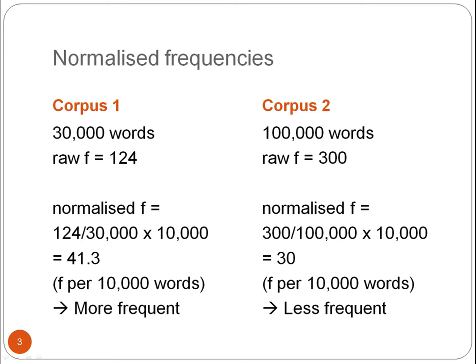Then we need to consider normalised frequencies, that is, frequencies per number of words. For example, let's say corpus 1 has 30,000 words and the raw frequency of the word 'season' is 124. The normalised frequency then is 124 divided by 30,000 times 10,000, which is 41.3 — and that is the frequency per 10,000 words.